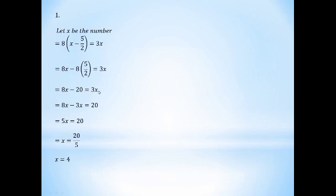The number is 8, which is 8 times the answer is 8x, which is 8x minus 8, which is 5 by 2. So 5 by 2 equals 3x.